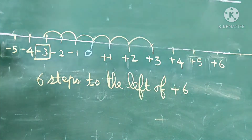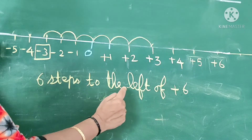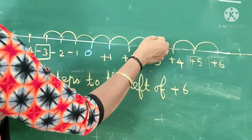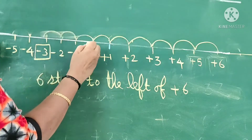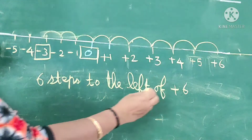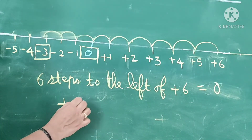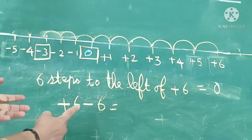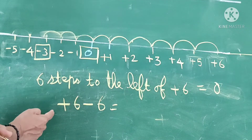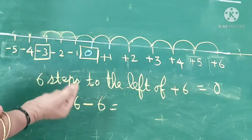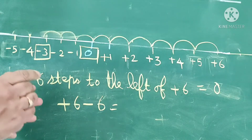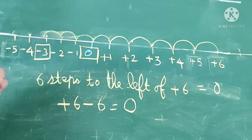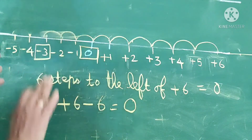One more example where you will get 0: 6 steps to the left of positive 6. Positive 6 is here. Counting 1, 2, 3, 4, 5, 6 — you will get 0. So positive 6 plus negative 6: both numbers have different signs, subtract 6 minus 6 which gives 0. Remember, 0 does not possess any sign — 0 does not have a positive or negative sign. So in the case of getting 0, put 0 as it is.